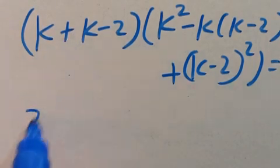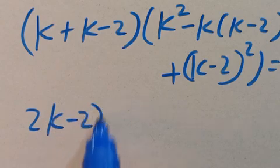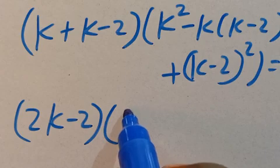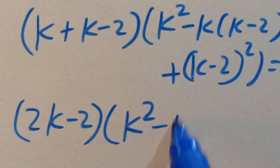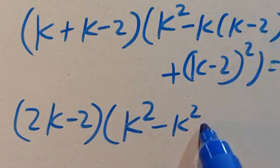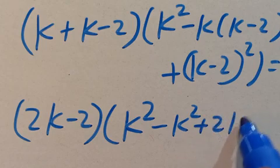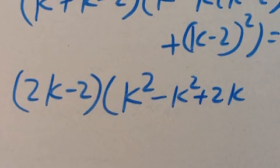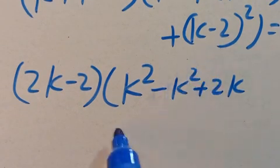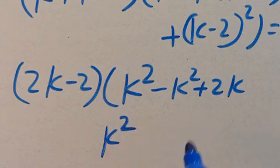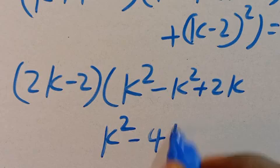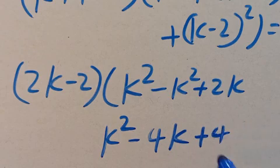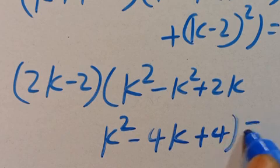From here we have 2k minus 2 in parentheses, multiplied by k squared, minus k squared, plus 2k. When you open this bracket again, we are going to have k squared minus 4k plus 4, equals zero.